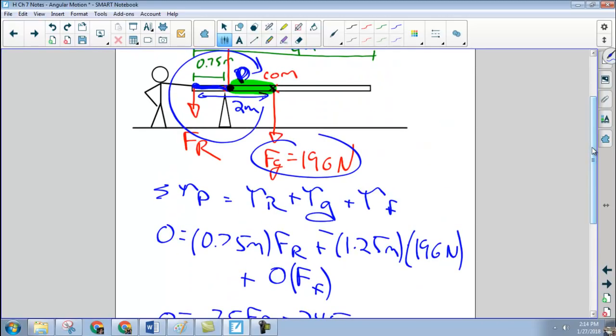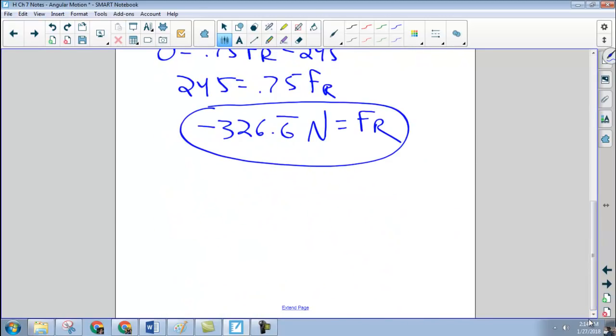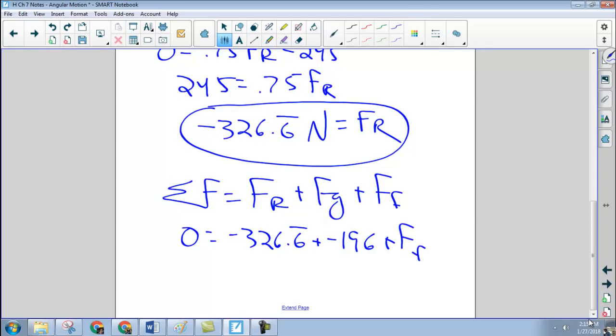I guess we can go ahead and put a negative on it because it's downward. And now we can use the fact that our net force has got to be 0 to find the force of the fulcrum. So that force is force of Roy plus force of gravity plus force of the fulcrum. So 0 equals negative 326.6 plus negative 196 plus the force of the fulcrum. And the force of the fulcrum then ends up being 522.6 newtons.